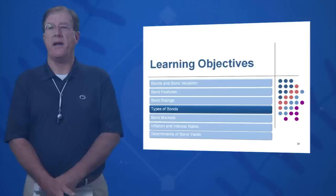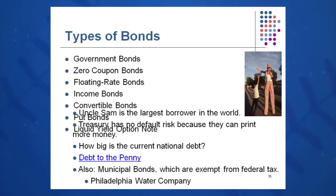In learning objective four, we're going to talk about types of bonds that we may encounter out there on the market. There are many: government bonds, zero coupon bonds, floating rate bonds, income bonds, convertible bonds, put bonds, and liquid yield option notes.